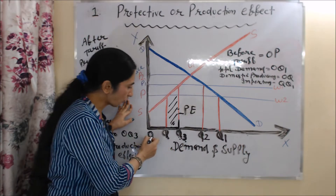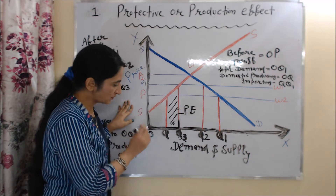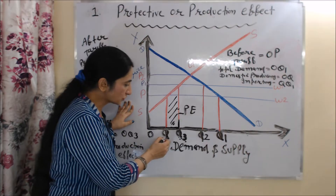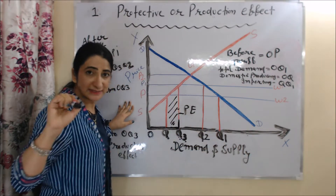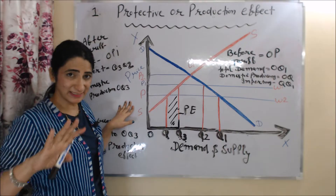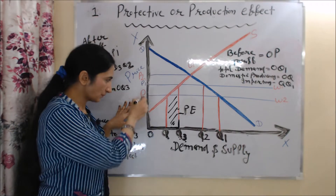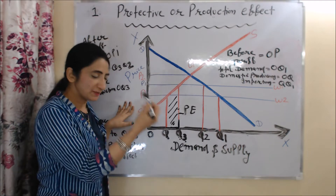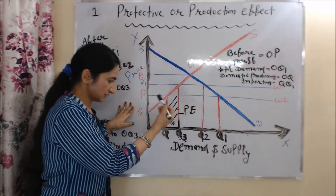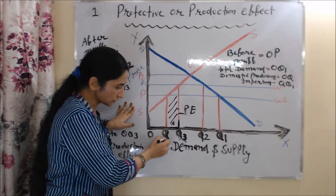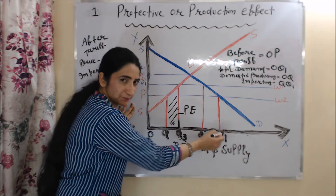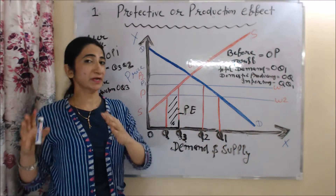Initially, before imposing any tariff — when there was no tariff — the price of goods was OP. Domestic demand was OQ1, domestic production was OQ, and import was QQ1.